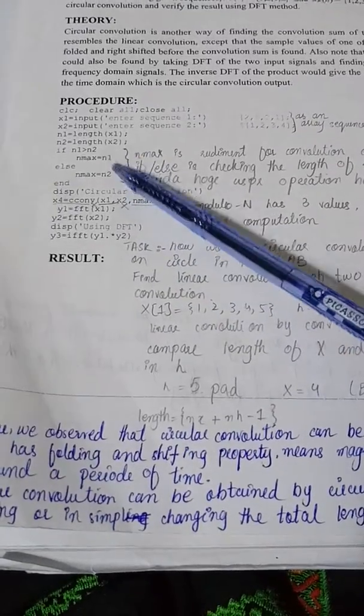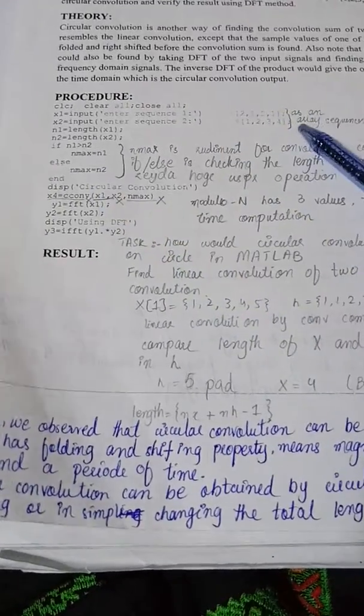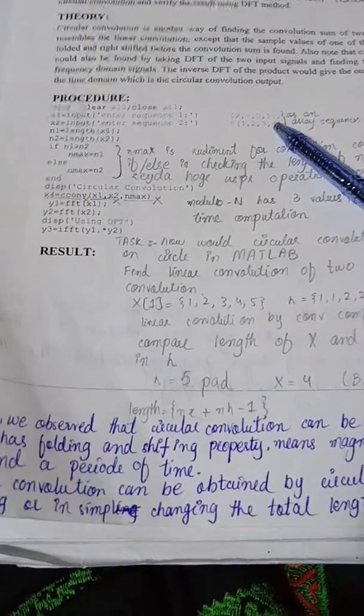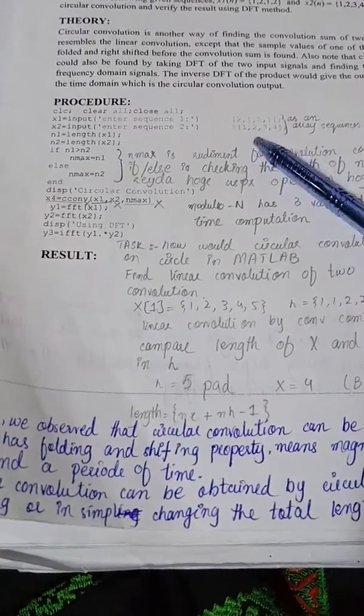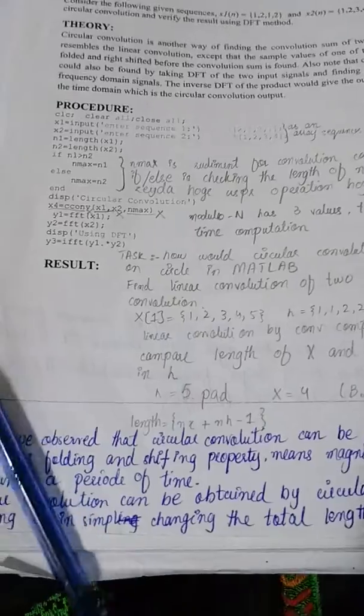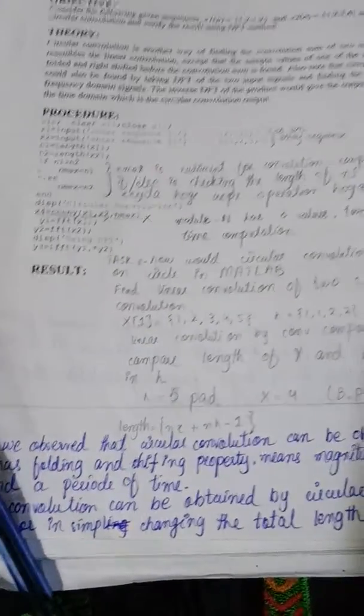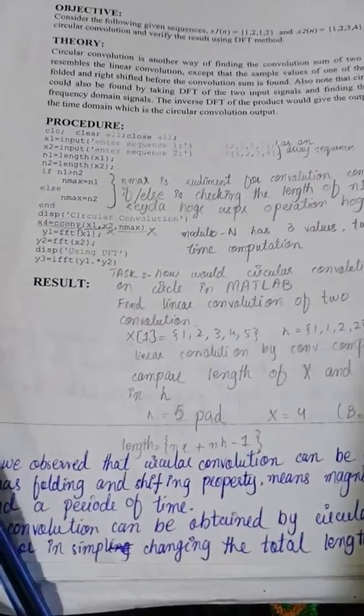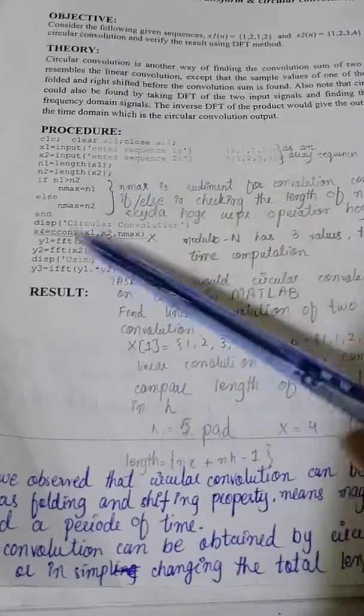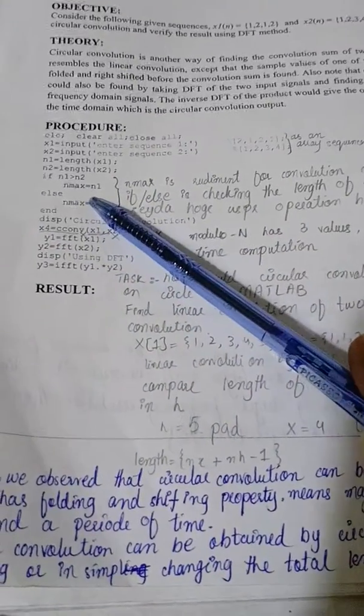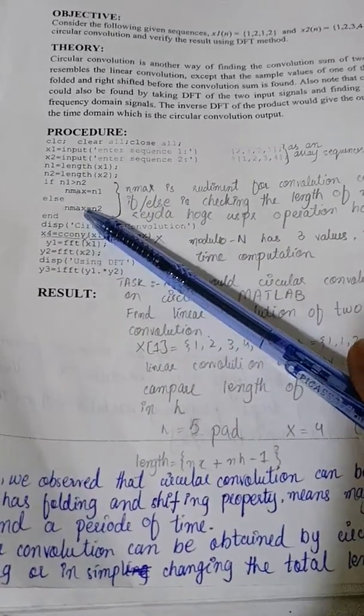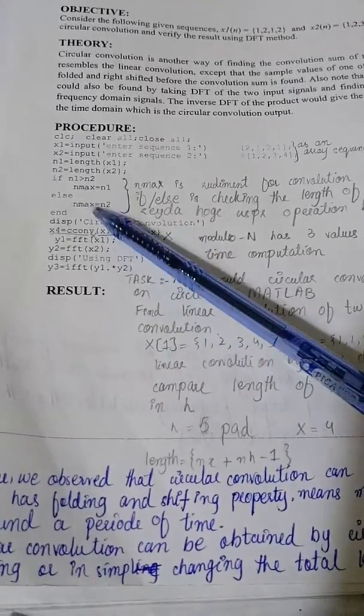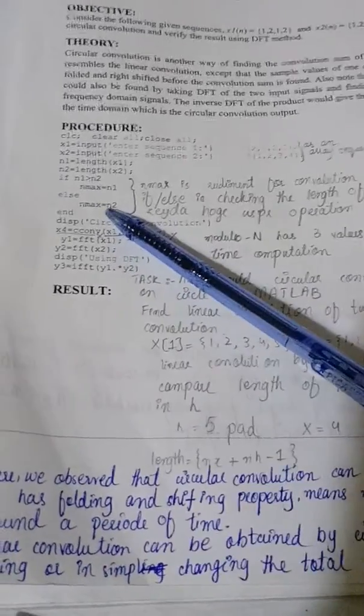Here it is not necessary to use if and else commands as the length of both signals is equal. But if we have a system in which both signals do not have the same length, then nmax will become equal to the length of the maximum signal. Okay, nmax should be the maximum length.